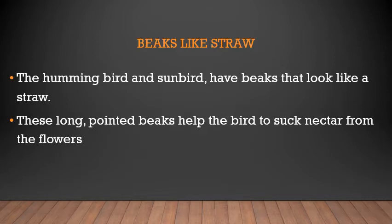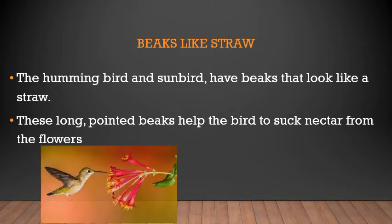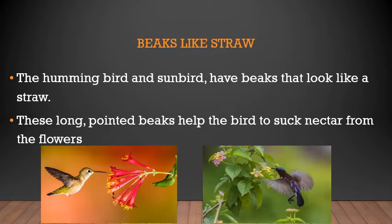Next is the straw-like beak. The hummingbird and sunbird have a beak that looks like a straw — the kind you use for drinking juice. Hummingbirds are special because they are the only birds that can fly backwards. These long, pointed beaks help the birds to suck nectar from flowers.